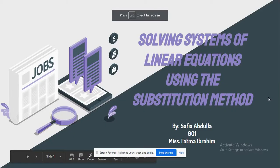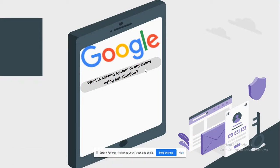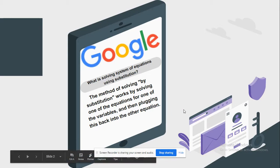Solving a system of linear equations using the substitution method. What is solving a system of equations using substitution? The method of solving by substitution works by solving one of the equations for one of the variables and then plugging that number back into the other equation.